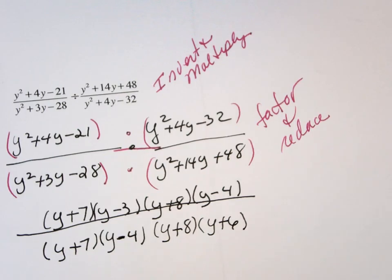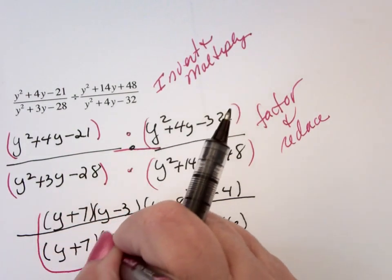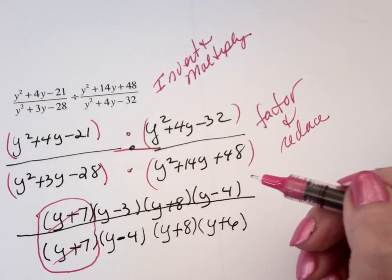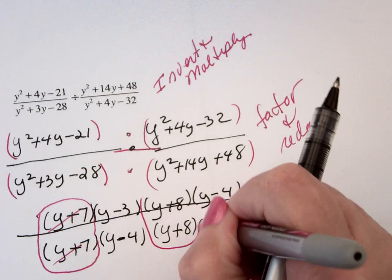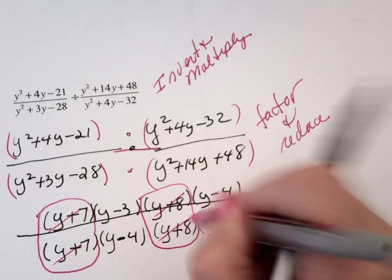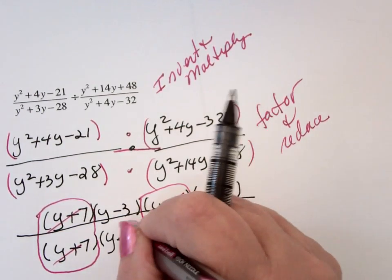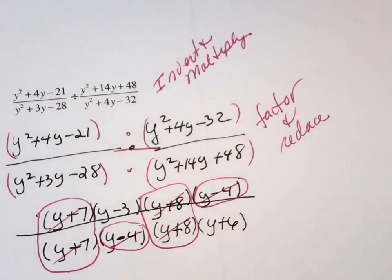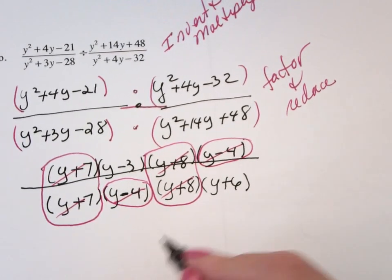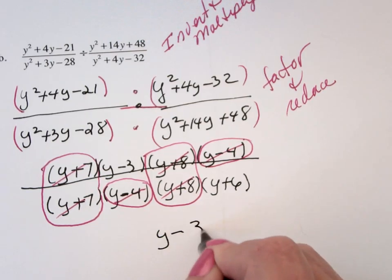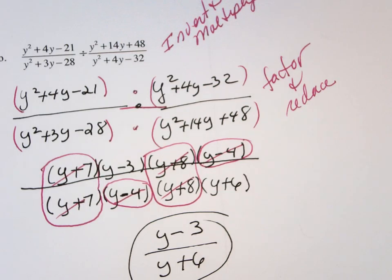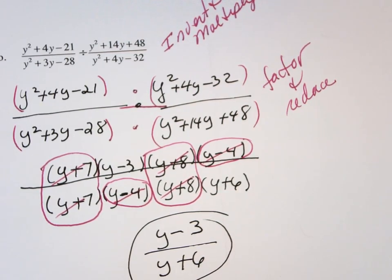Now I look to match things up. Y plus 7, y plus 7, those are going to reduce out, that's going to form a 1. Y plus 8, y plus 8, those reduce out, that forms a 1. Y minus 4, y minus 4, those reduce out, those form a 1. And I am left with a final answer of y minus 3 over y plus 6.